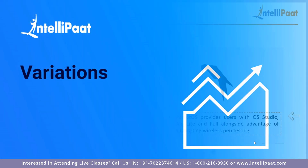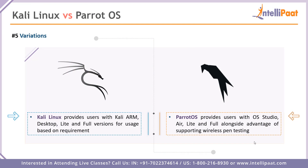Coming to point number five, it's variations. Kali Linux provides users with Kali ARM for IoT devices, Kali Desktop, Kali Lite, and Kali Full versions, which you can choose based on your requirements. Parrot OS similarly offers Parrot Security OS Studio, Parrot Security OS Air, Lite, and Full versions. In all varieties of Parrot OS, the biggest advantage is full native support for wireless penetration testing — something Kali Linux does not offer, giving Parrot OS a significant edge over other security OSes.